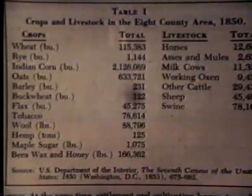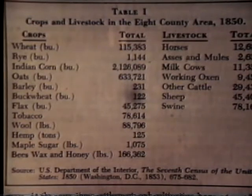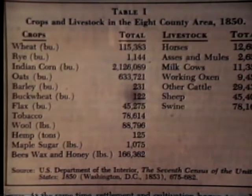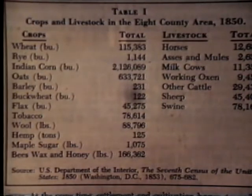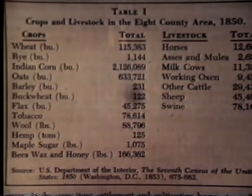Corn was the leading crop and there was an amazing variety of crops raised. Looking at the 1850 census for the eight counties surrounding Springfield, we see wheat, rye, Indian corn — by far the largest crop planted — oats, barley, buckwheat, flax, tobacco, wool, hemp, maple sugar, beeswax and honey. Livestock included horses, asses and mules, milk cows, working oxen — surprisingly over 9,000 working oxen in those eight counties in 1850, a generation after settlement — other cattle, sheep, and swine.